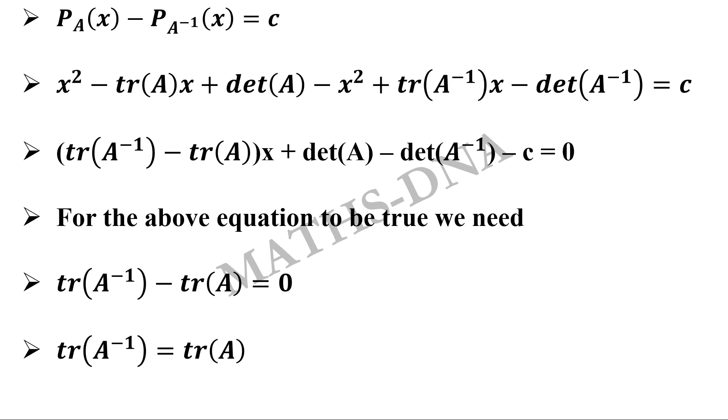But there is no variable on the right hand side containing x. So the variable which is on the left hand side contains x, so the coefficient of that variable has to be 0, which gives us tr(A^-1) equals to tr(A).